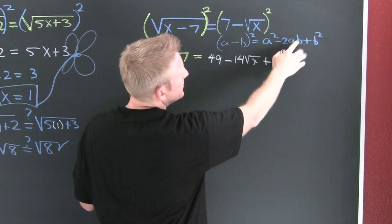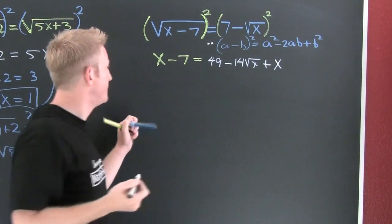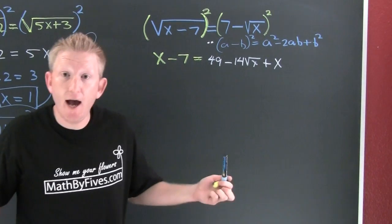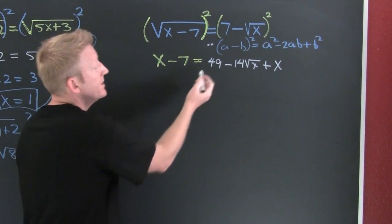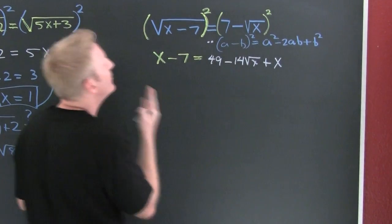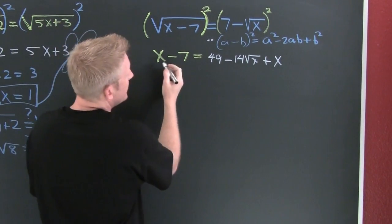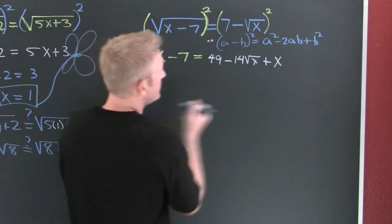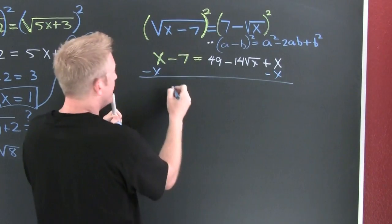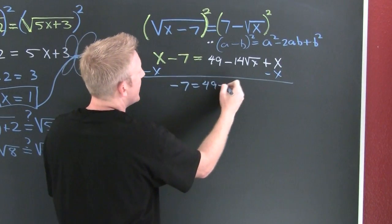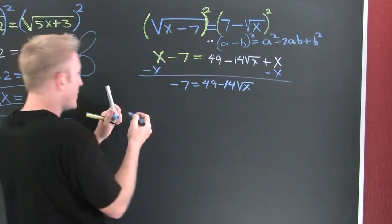I need to isolate that root, get it by itself. Subtract off the 49 from both sides. Additive inverses when I subtract that x off each side, the x's go away. Minus seven is equal to 49 minus 14 roots of x.